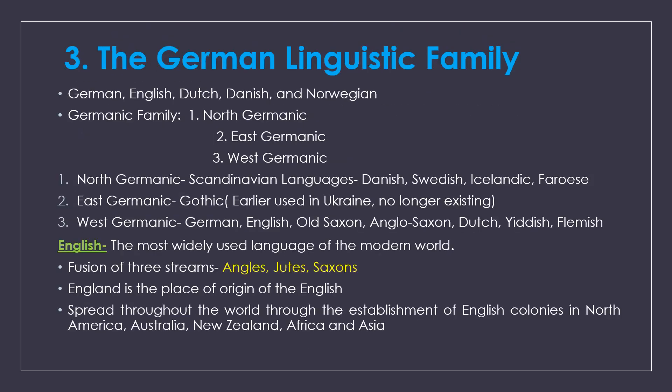The third family is the Germanic linguistic family. It includes German, English, Dutch, Danish, and Norwegian. The Germanic family is divided into three groups: North Germanic, East Germanic, and West Germanic. North Germanic includes Scandinavian languages — Danish, Swedish, Icelandic, and Faroese. East Germanic includes Gothic. West Germanic languages are German, English, Old Saxon, Anglo-Saxon, Dutch, Yiddish, and Flemish.